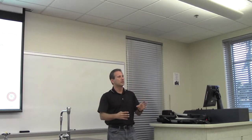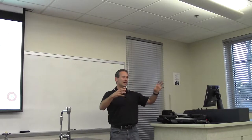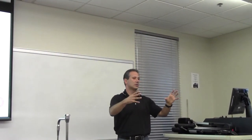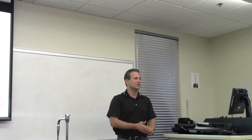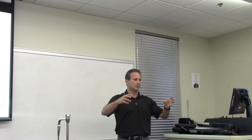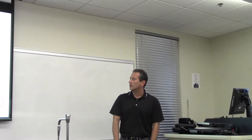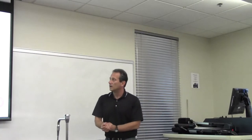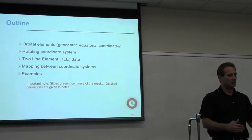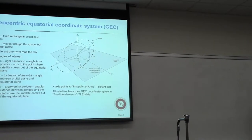First, we're going to define what is called the geocentric coordinate system — a fixed coordinate system with Earth as the center of the universe. Then we'll determine the position of the satellite in that system, which is used universally in astronomy to map the sky. Once we show how to locate the satellite in that universal coordinate system, we'll find how to locate a satellite relative to the rotating coordinate system we live on. I'll complete this with a detailed example and supplementary material on the website.